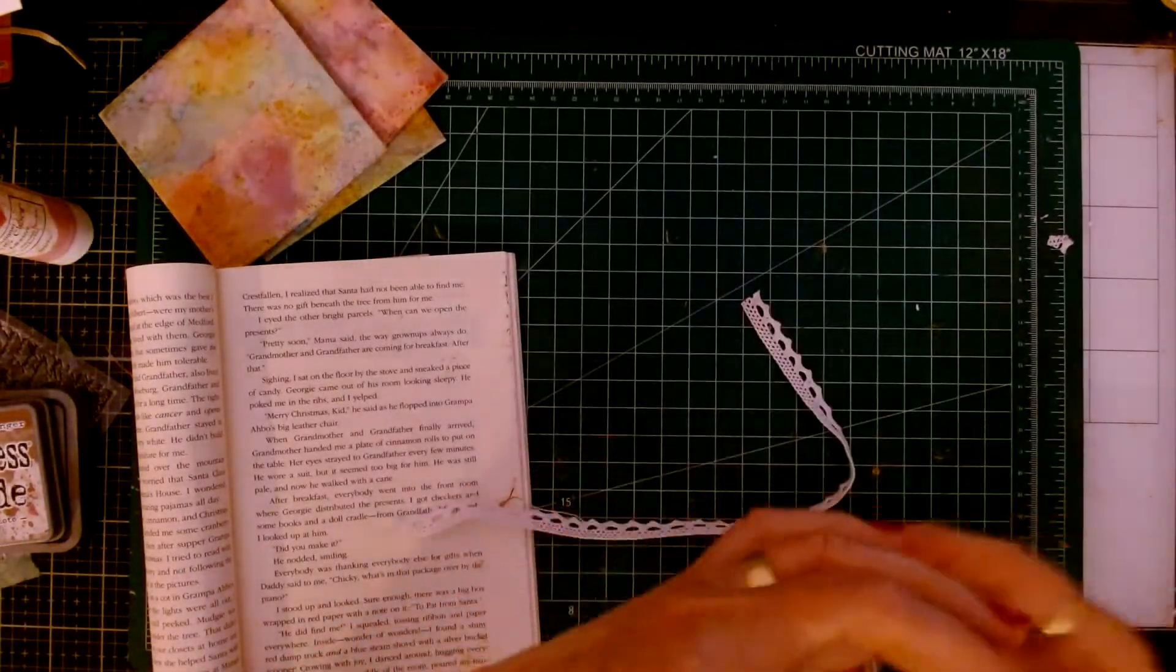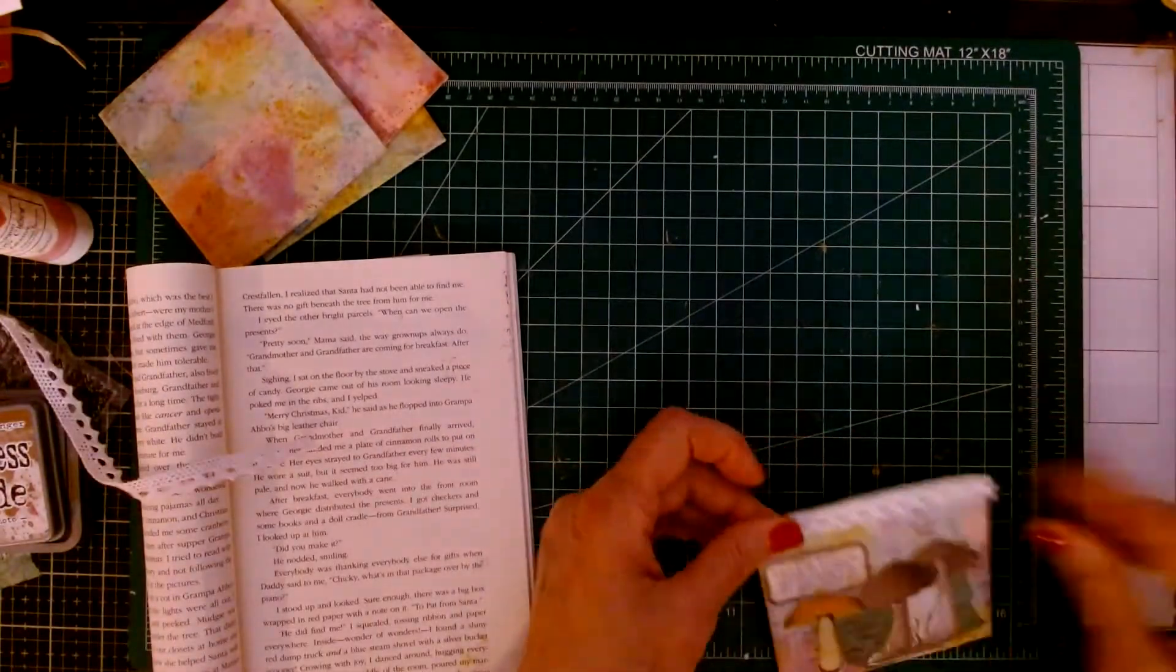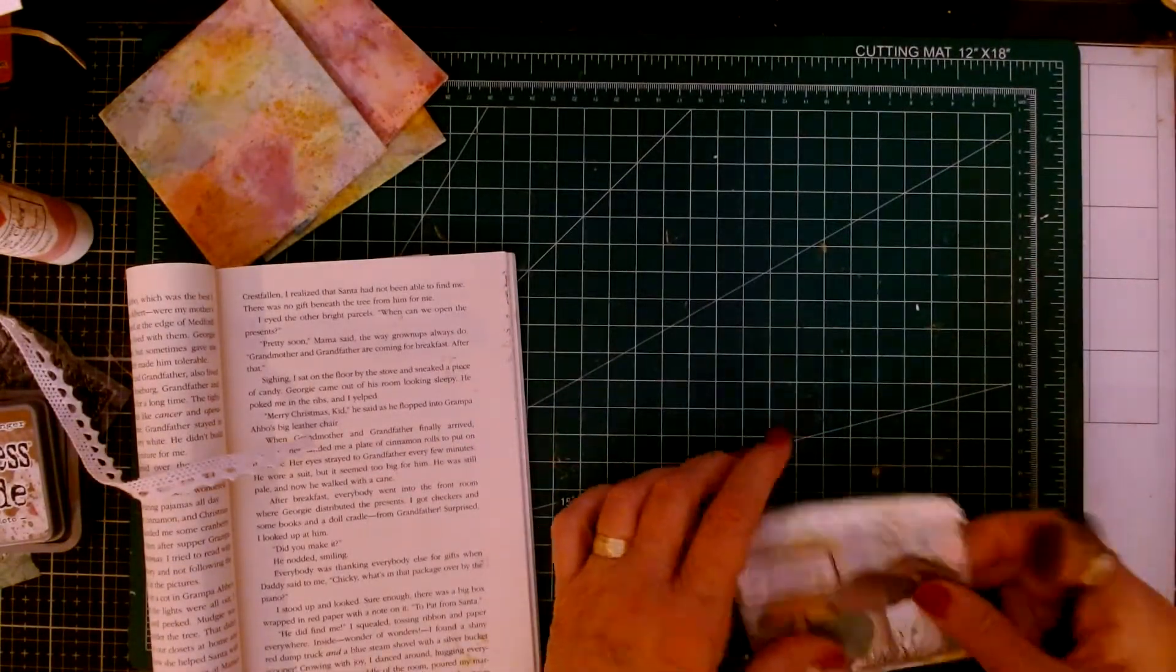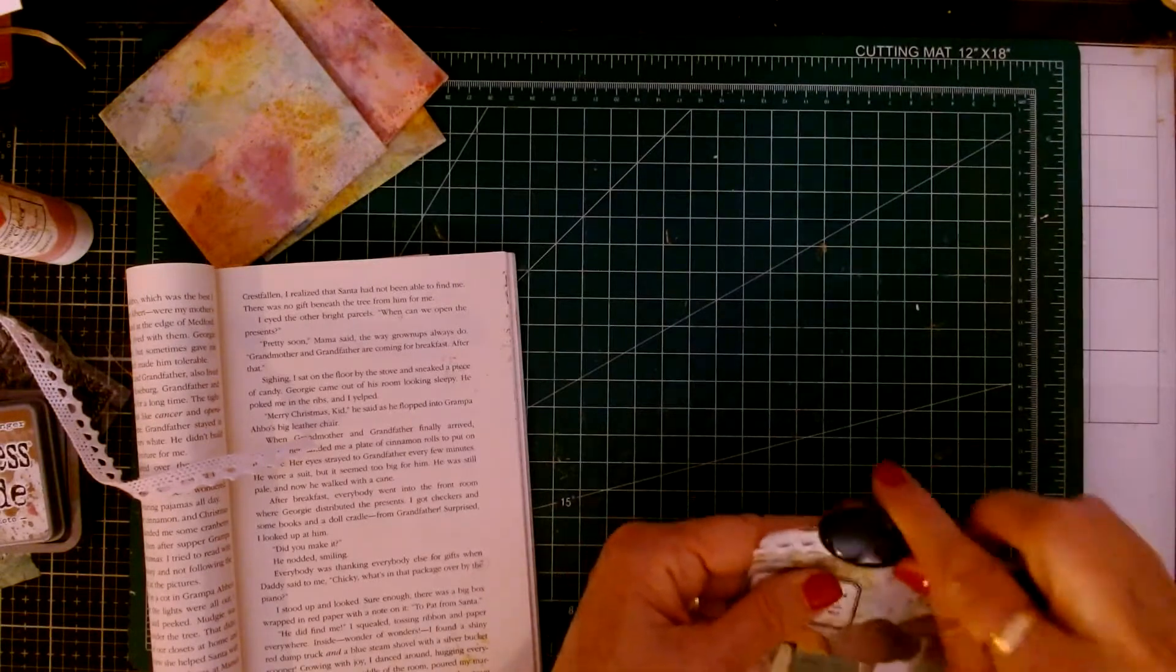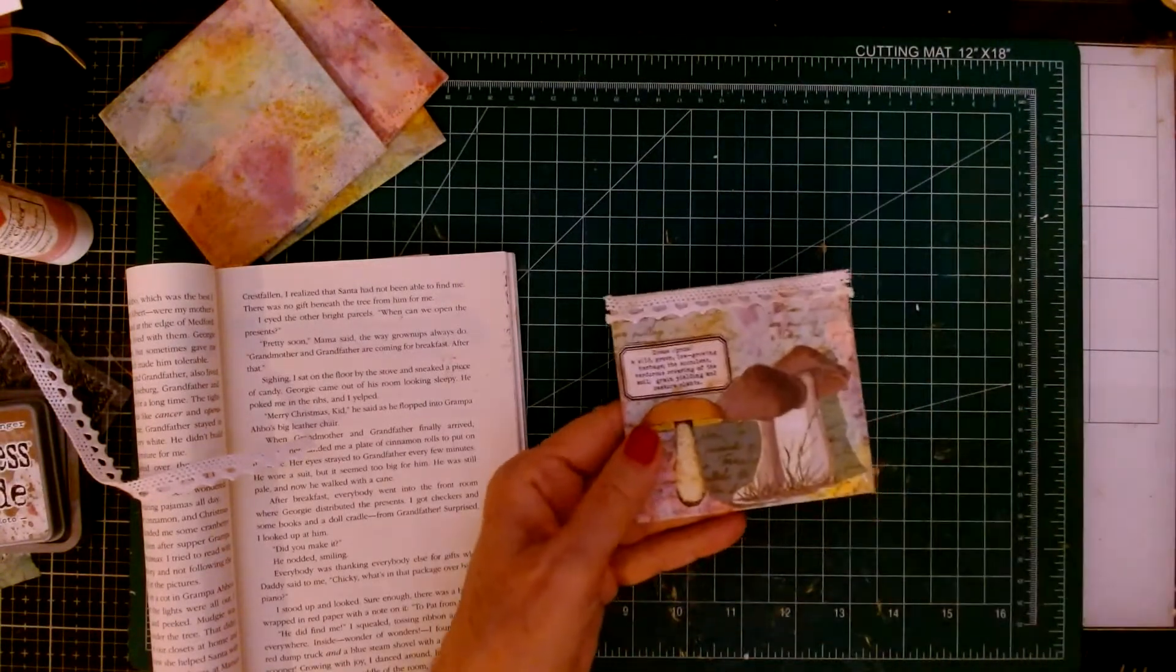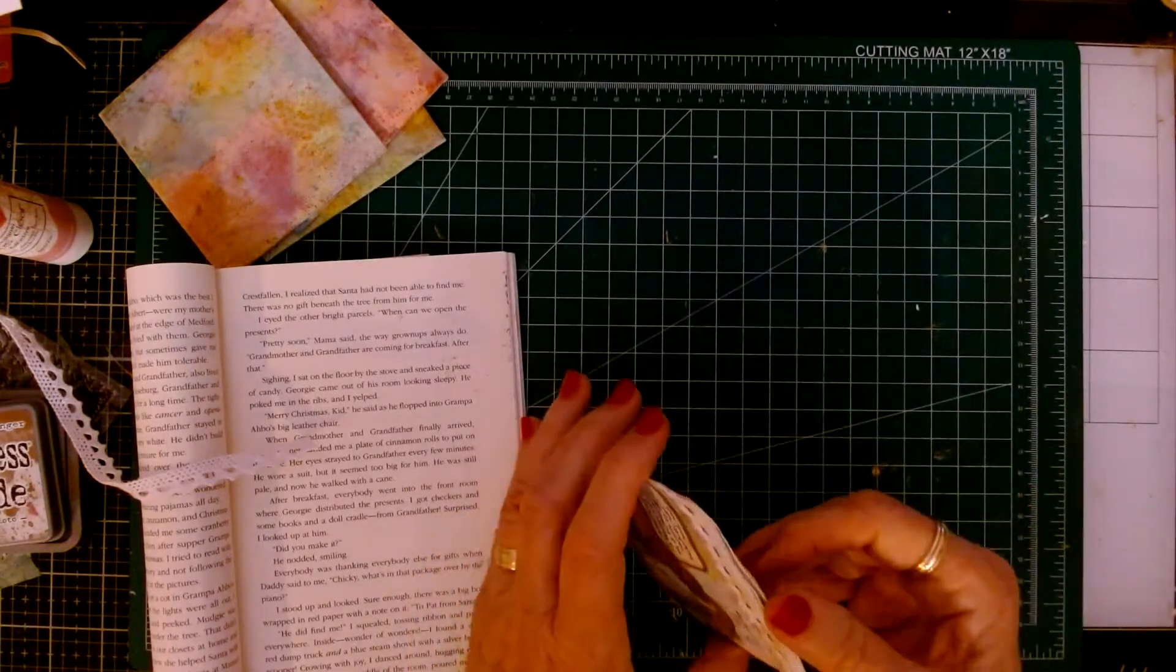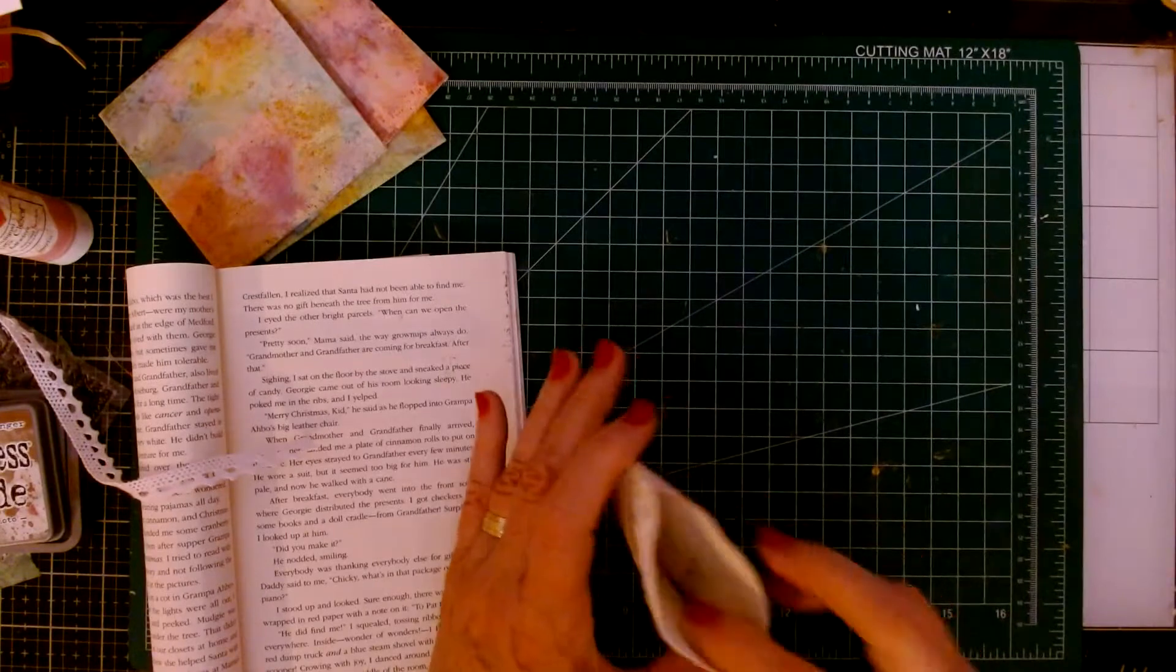Okay, so now that looks nice. So what I'm going to do is just ink this up a little bit because it's so white. So there, that looks nice. And I'm just going to keep it looking like this. I'm not going to put any bling on here. And here's our pocket.